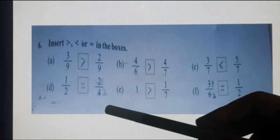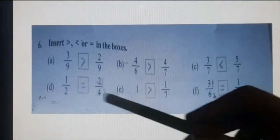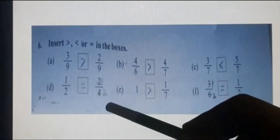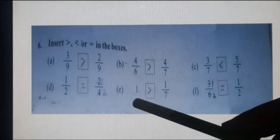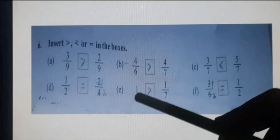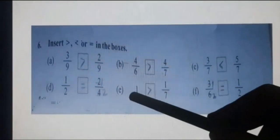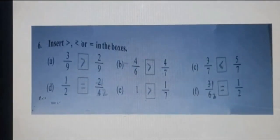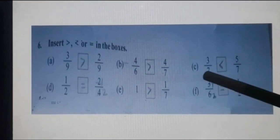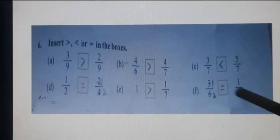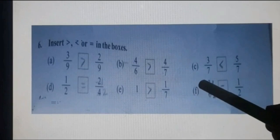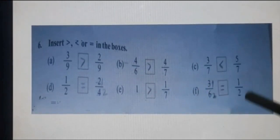Part D: 1 upon 2 vs. 2 upon 4. We know 2 ones are 2 and 2 twos are 4, so both sides equal 1 upon 2 — equal sign goes here. Part E: 1 vs. 1 upon 7. 1 is a whole number and 1 upon 7 is a fractional part, so the whole number 1 is greater. Part F: 3 upon 6 vs. 1 upon 2. Since 3 ones are 3 and 3 twos are 6, the fraction becomes 1 upon 2, so equal sign goes in the box.